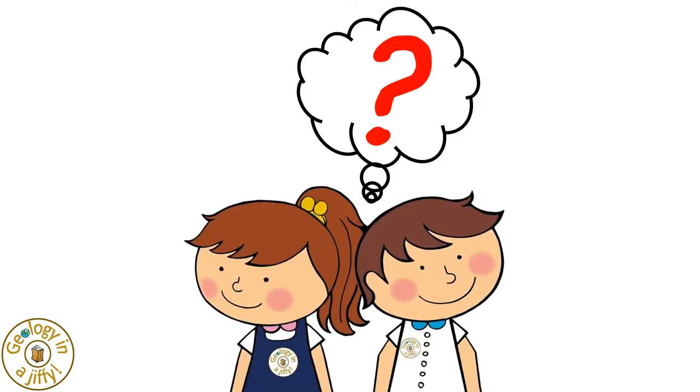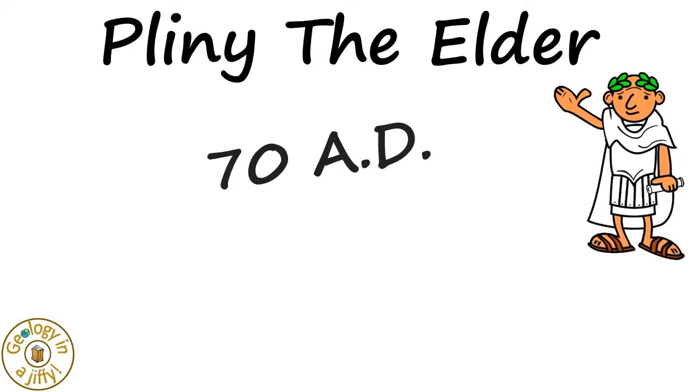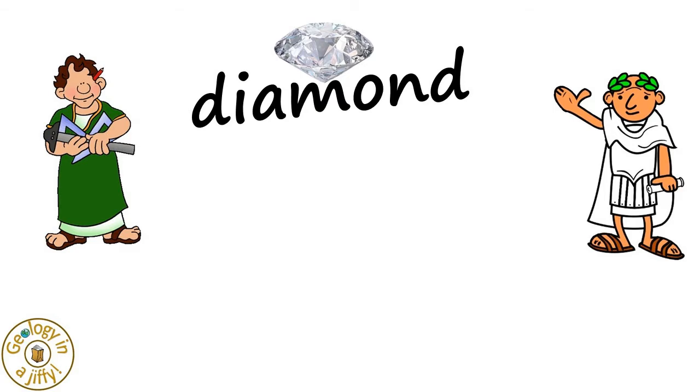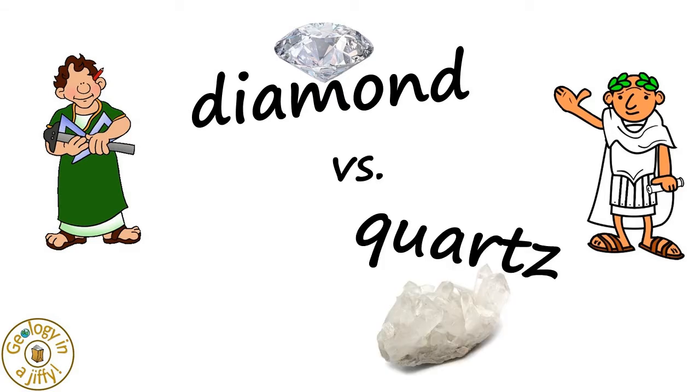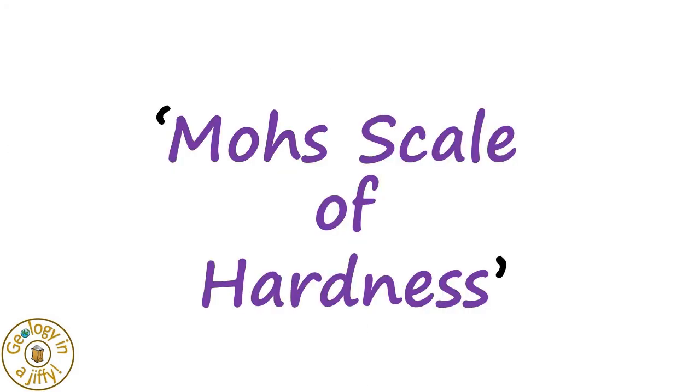The first people recorded to think about mineral hardness were the Greek Theophrastus and then the Roman Pliny the Elder, who both identified that diamond, when rubbed against quartz, proved that diamond was the harder mineral. Then this German geologist, Karl Mohs, devised the first proper scale, called the Mohs Scale of Hardness.